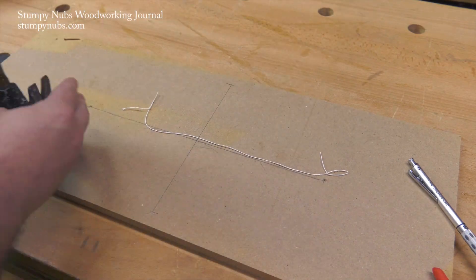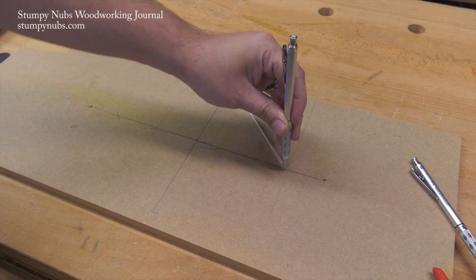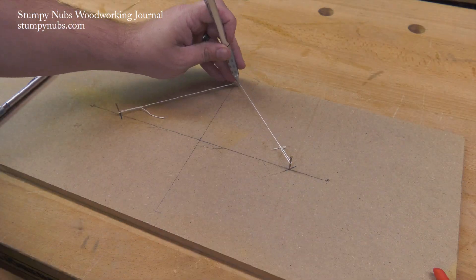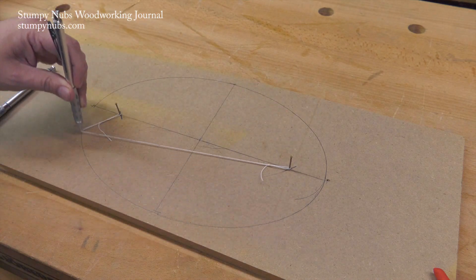Another way you've probably seen uses two nails and a string, or some methods use three nails. This method will give you a near perfectly shaped ellipse, but I've never seen anyone use this method and come out with the exact width and depth that they wanted for their ellipse.